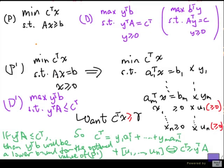In fact, we can use the dual theorem for the pair P and D to prove the same thing for P prime and D prime. That is, if P prime has an optimal solution, then so does D prime, and the optimal values are the same.